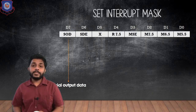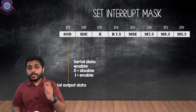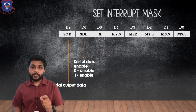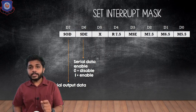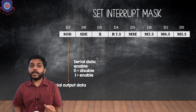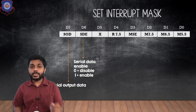The next bit is D6, which is serial data enable (SDE). To serially send data, this bit should be 1. When SDE is 1, we can send serial data out. If SDE is 0, we are not able to send serial output data.